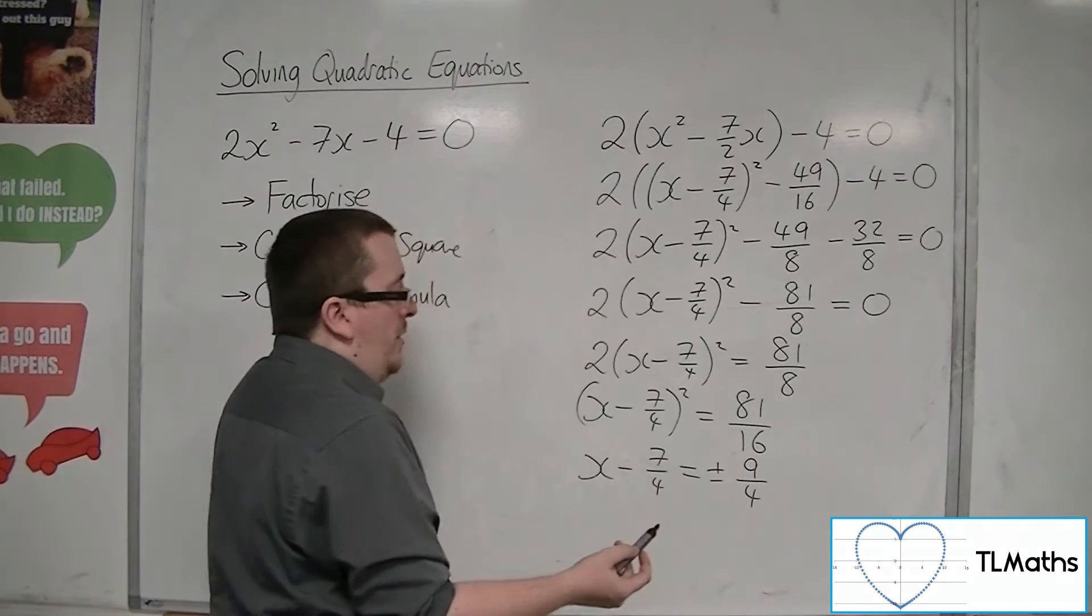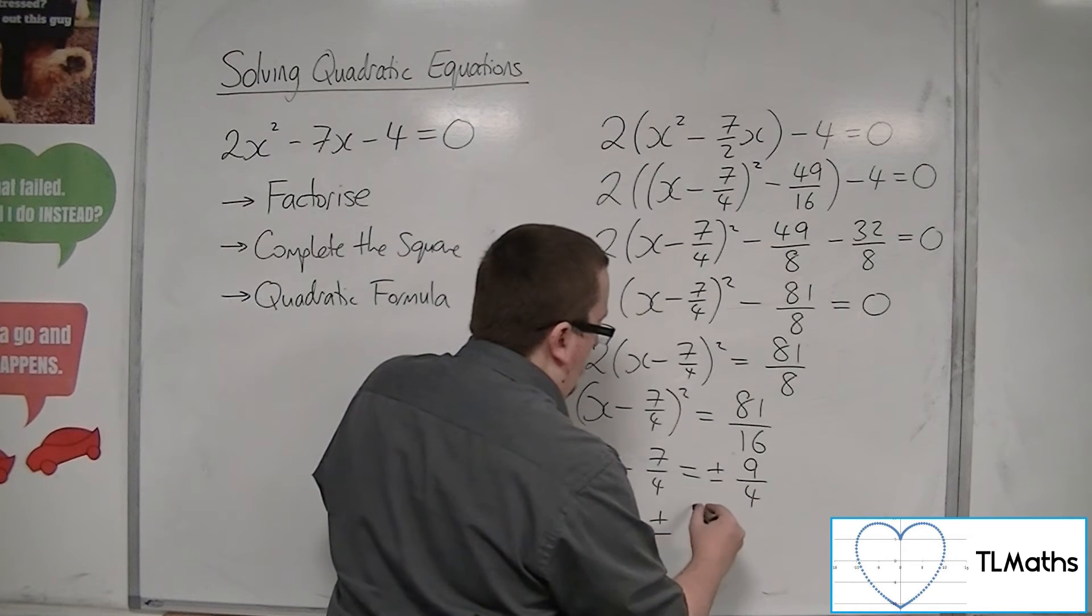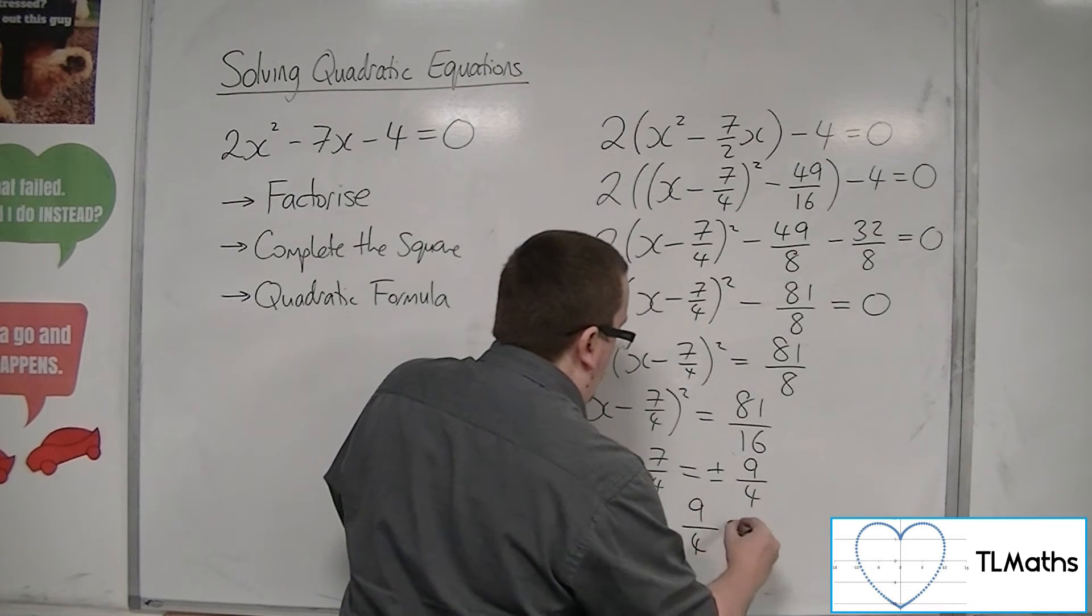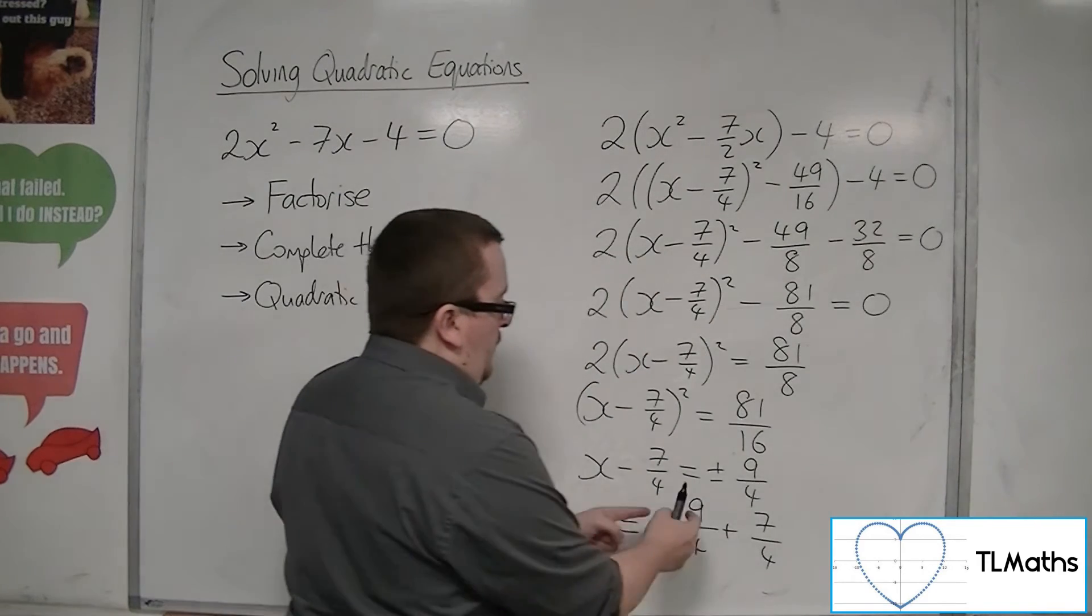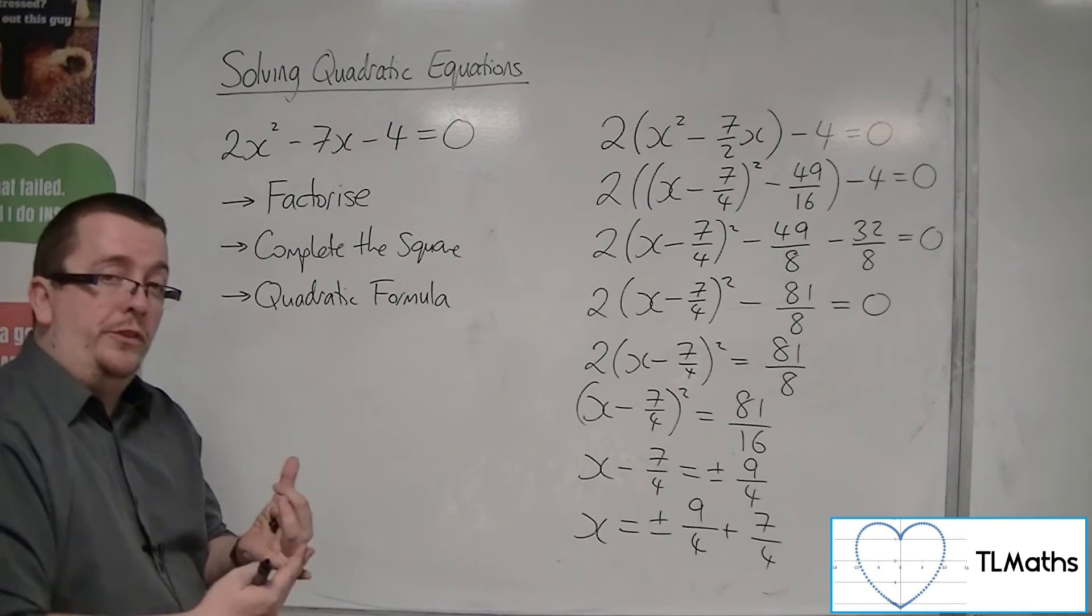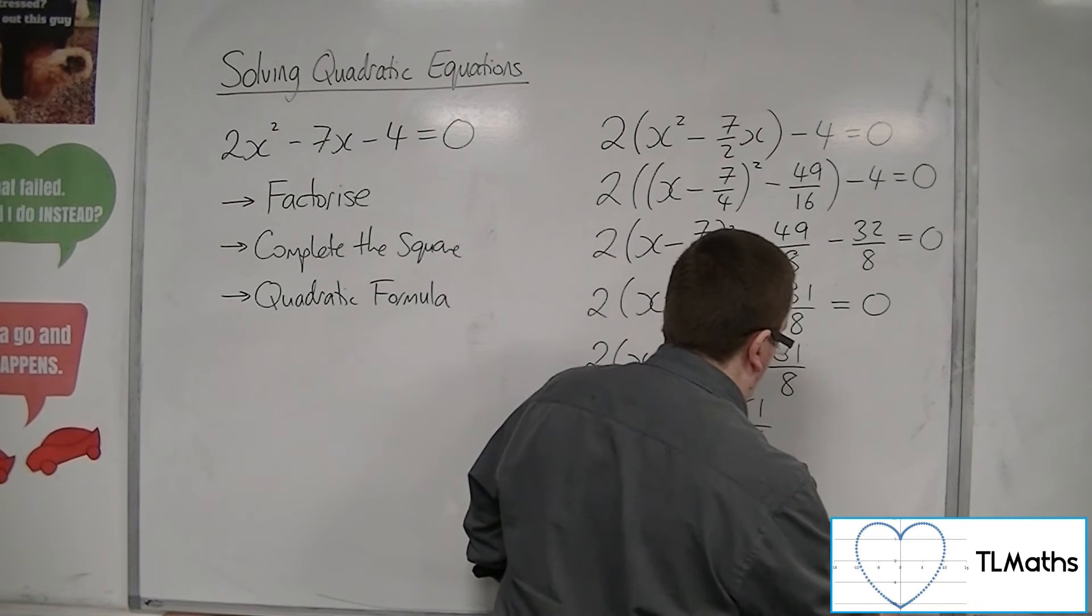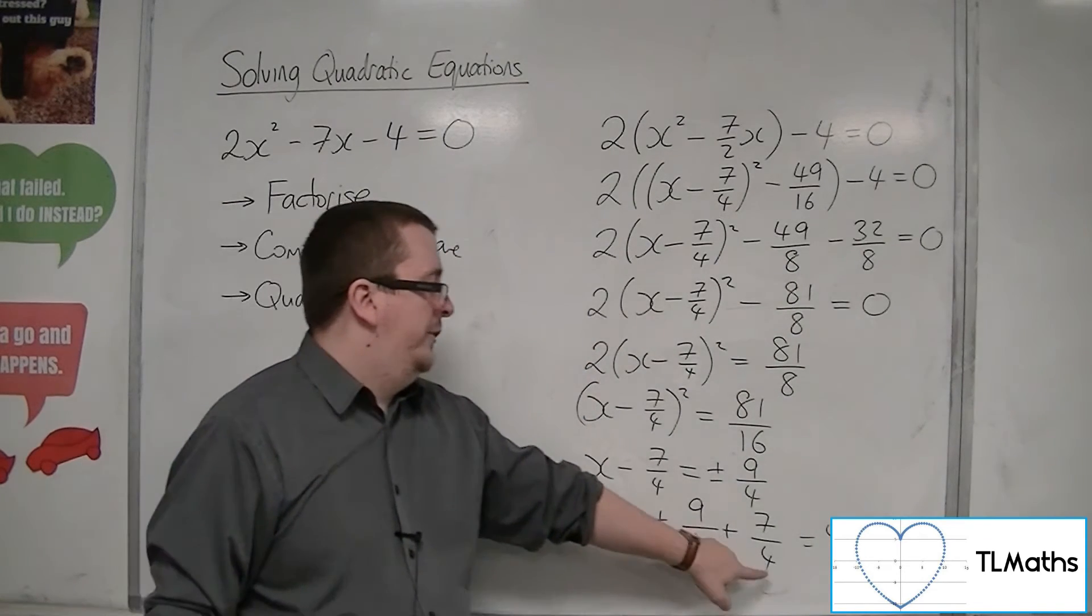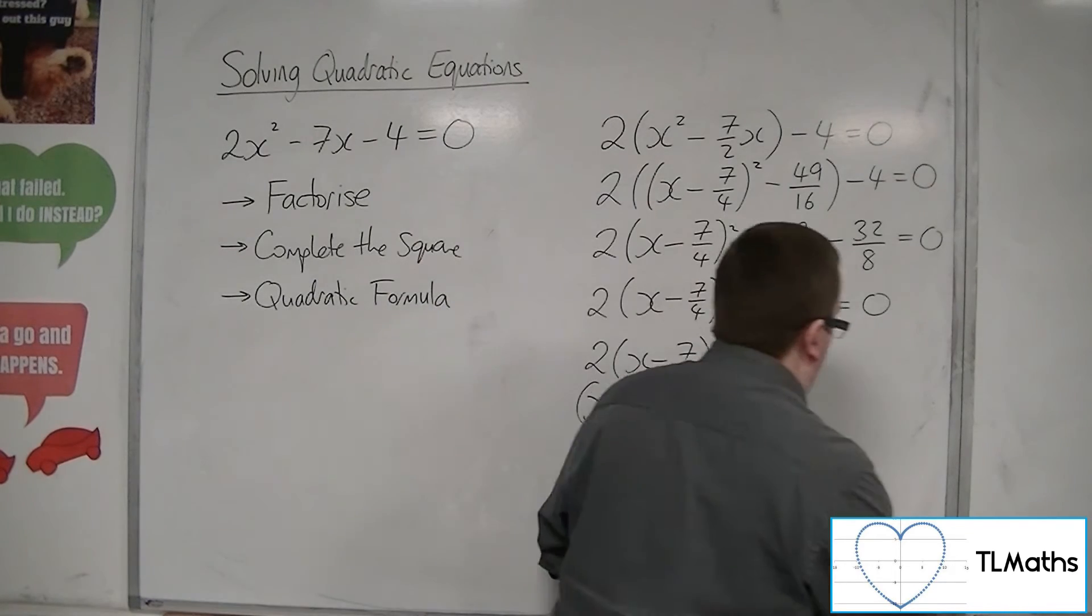And then you can add the 7 quarters to both sides. So plus or minus 9 quarters plus 7 quarters. So if you've got 9 quarters plus 7 quarters, that's 16 quarters, which is 4. And if you've got minus 9 quarters plus 7 quarters, you get minus 2 quarters, which is minus 1 half.